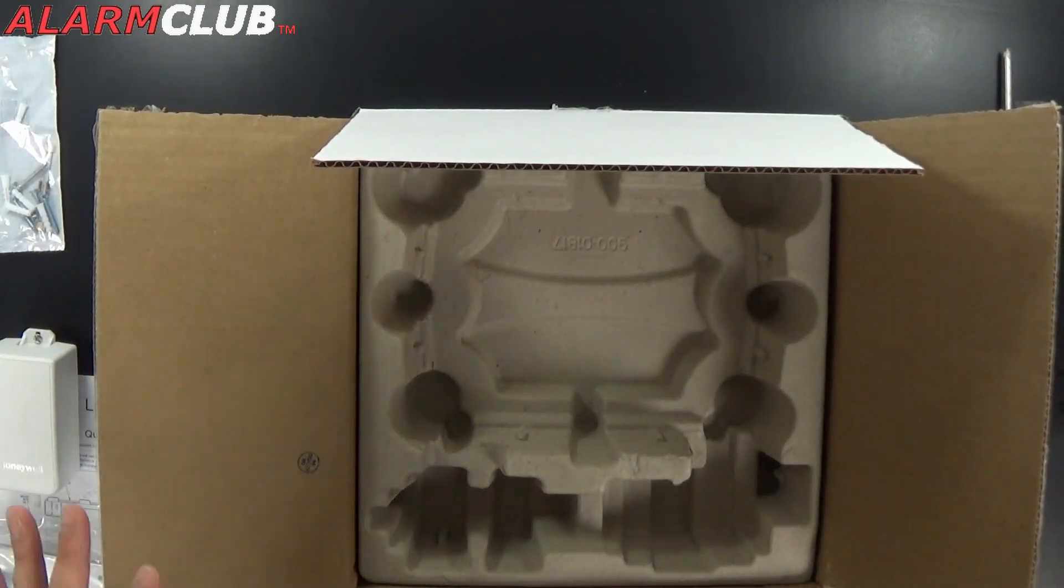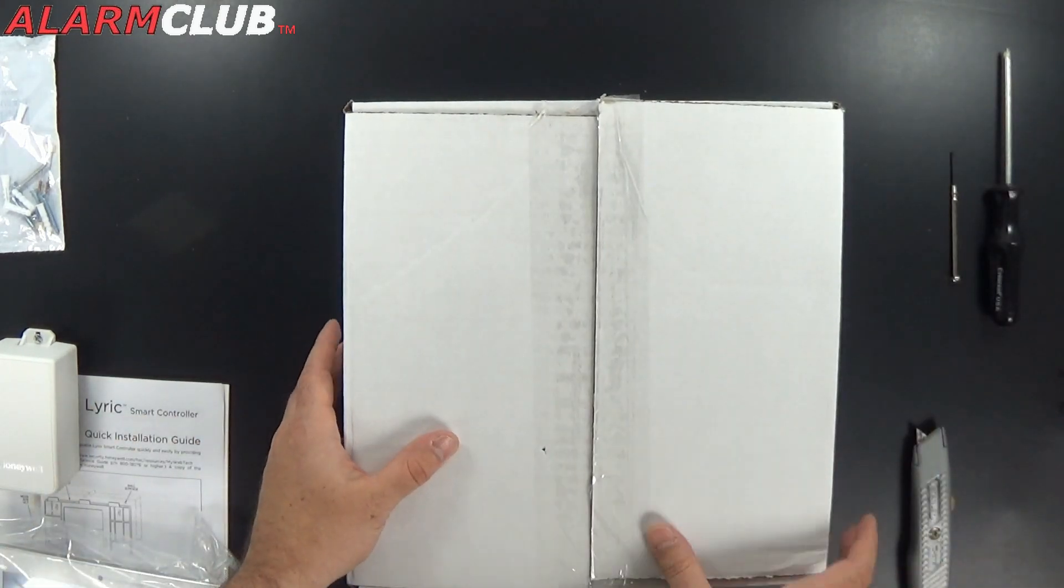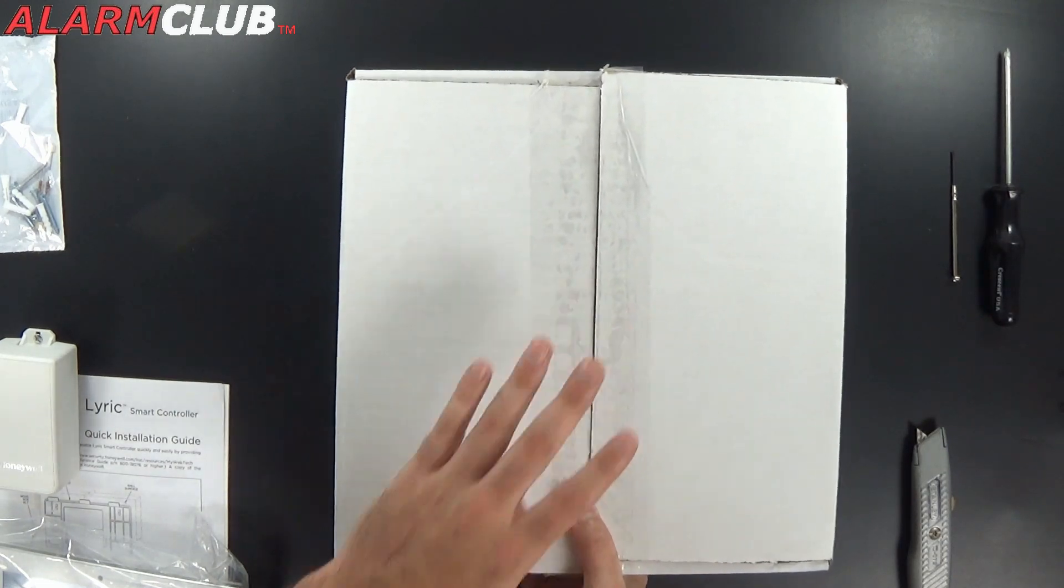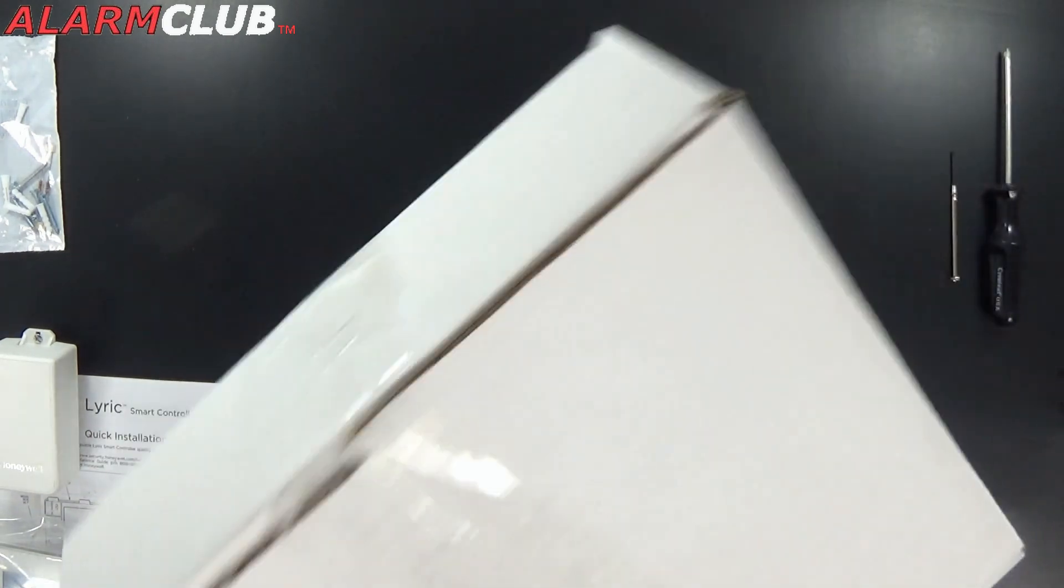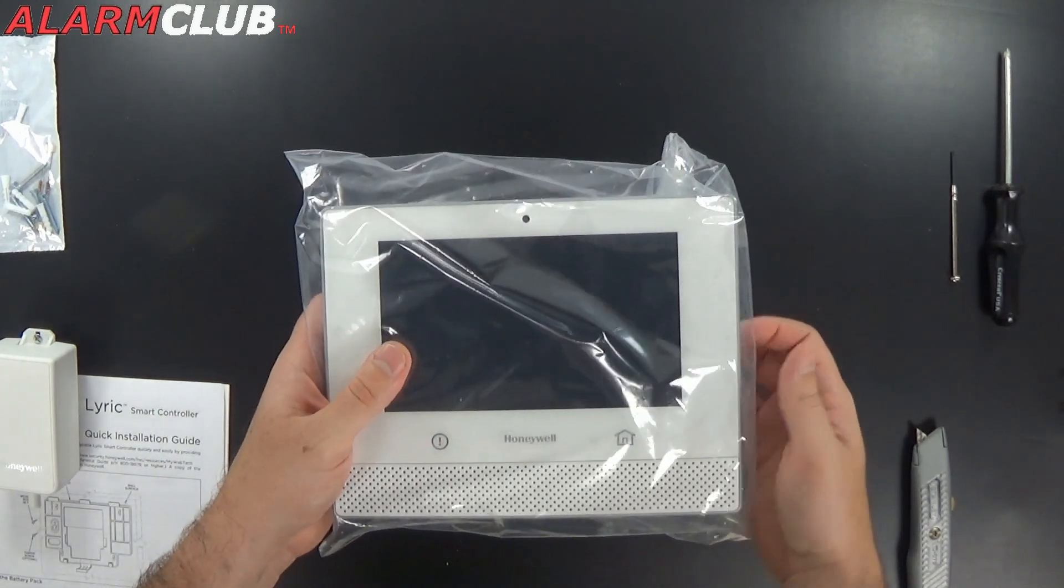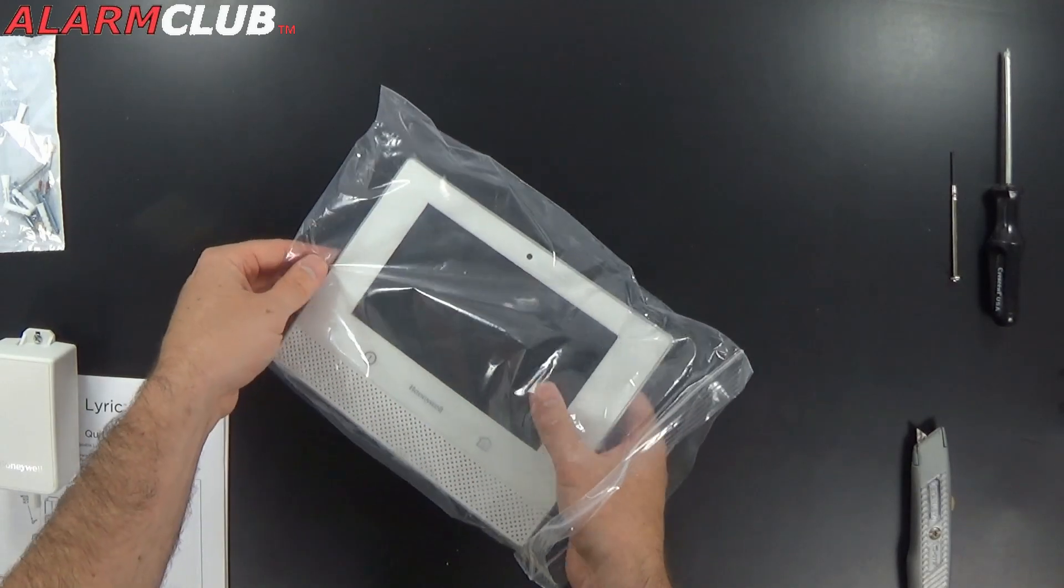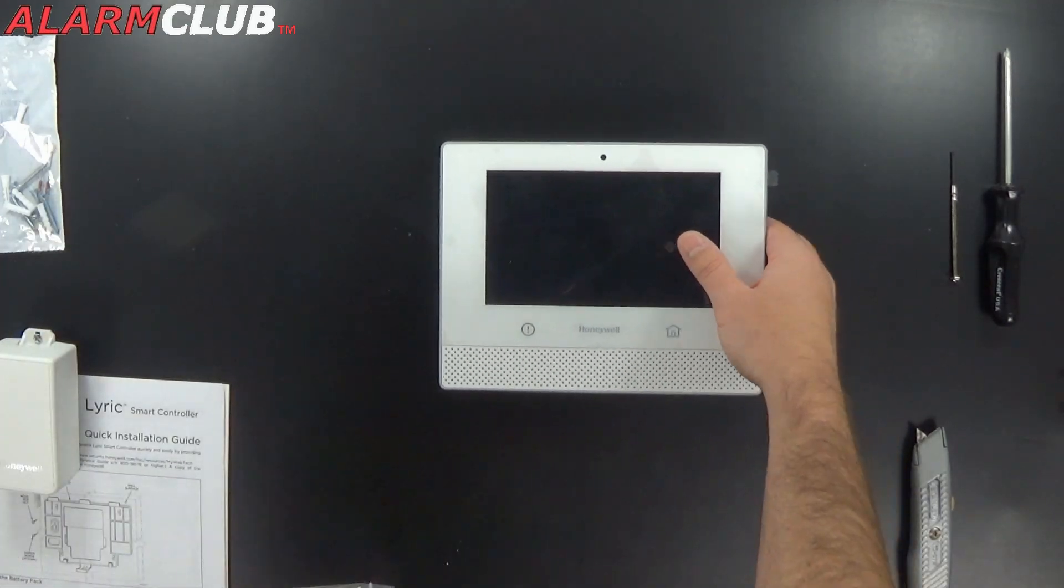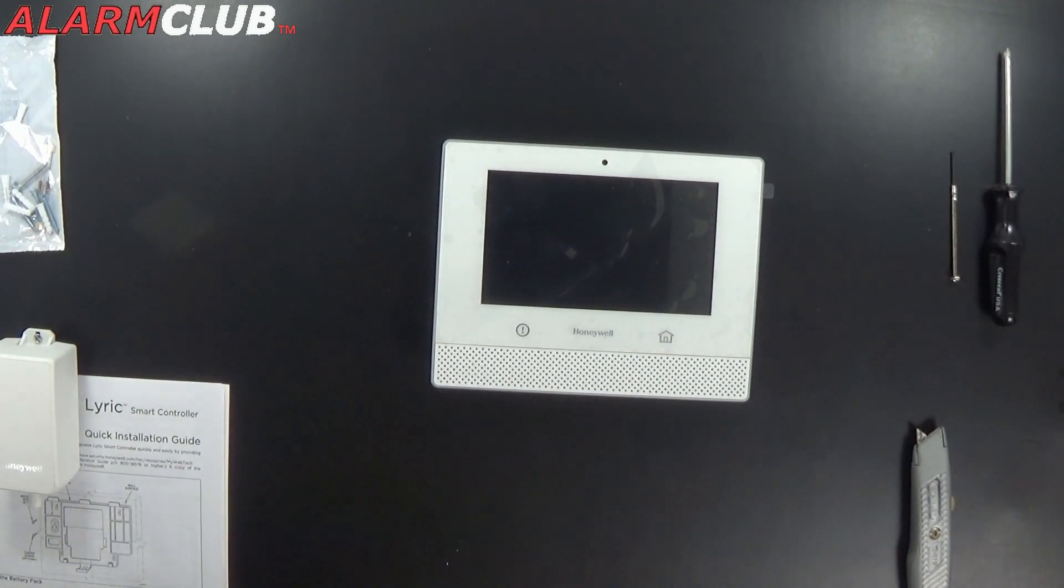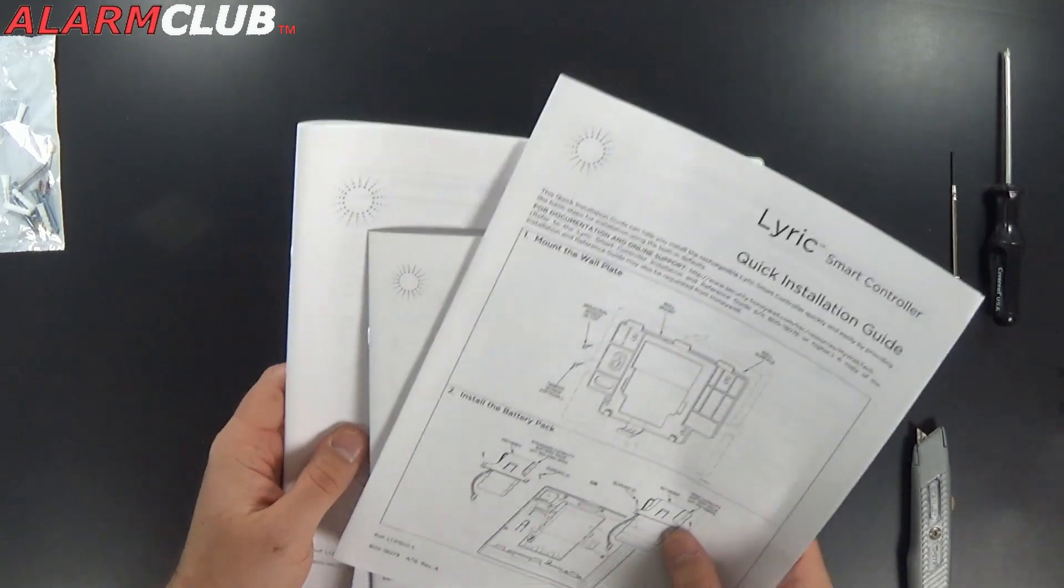Now keep in mind, when you're opening everything, make sure that you keep it all in resellable condition in the event that you need to return it back to Alarm Club for whatever reason. So you can take the box and put it to the side. Now take your Lyric Security System panel, remove it from its packaging box there. Keep this as well, put it with the box. And now you're left with your transformer and your instruction manuals.